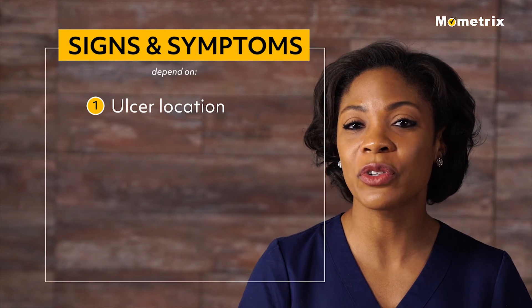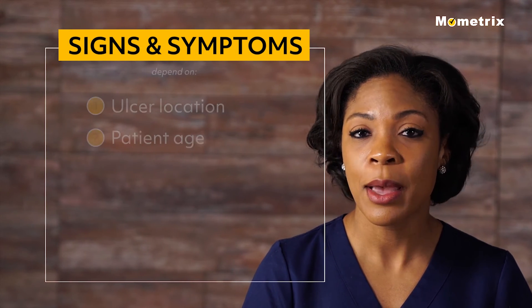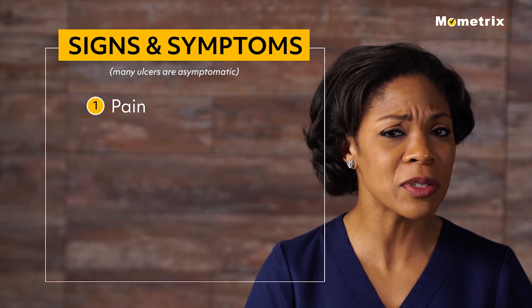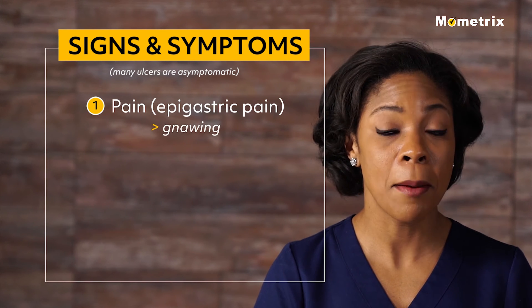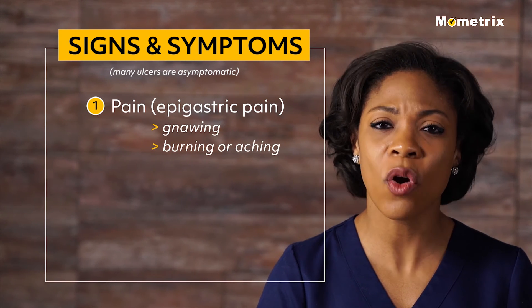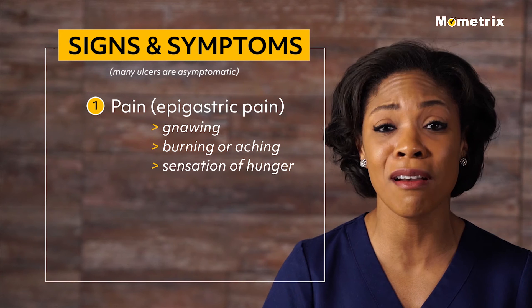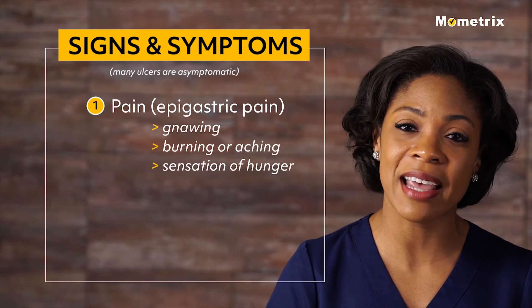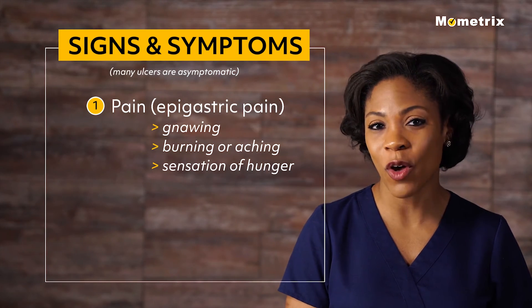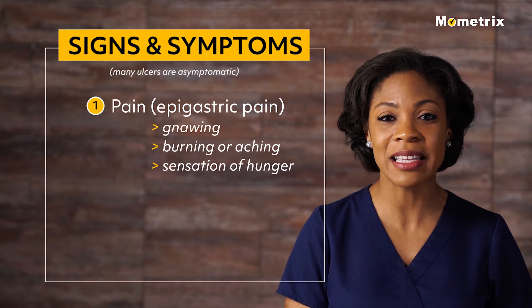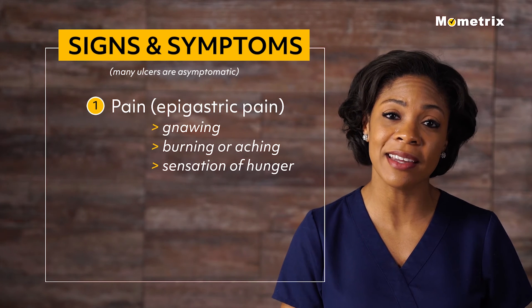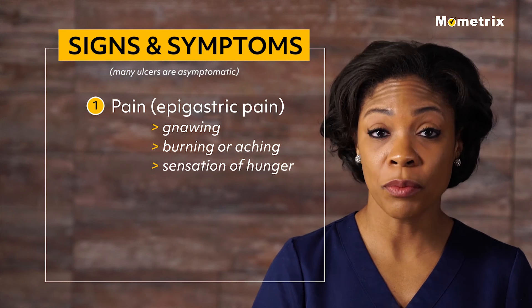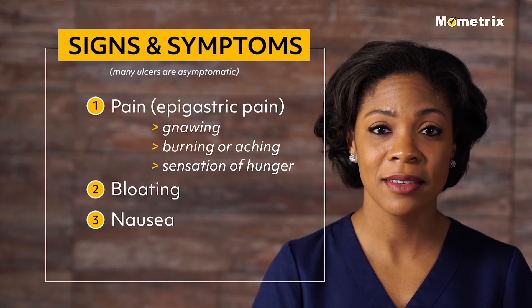Signs and symptoms depend on ulcer location and patient age. Many ulcers are asymptomatic, but pain is most common. Epigastric pain is usually described as gnawing, burning, or aching, or sometimes a sensation of hunger often relieved by food or antacids. The symptoms of a gastric ulcer often do not follow a consistent pattern. Eating sometimes exacerbates the pain rather than relieving it. They may also cause bloating, nausea, or vomiting.